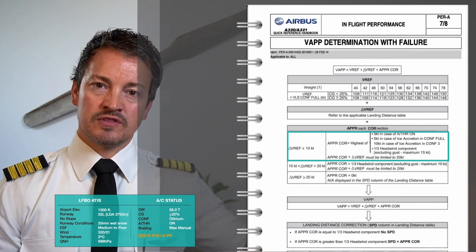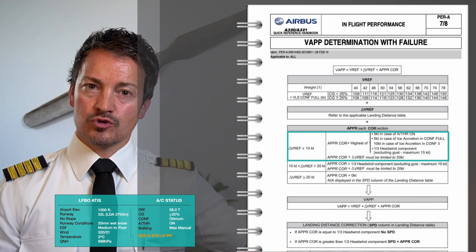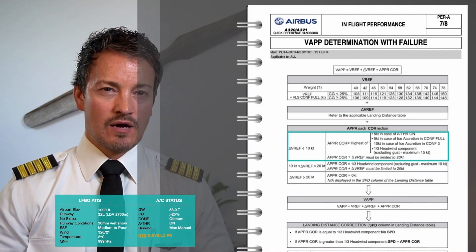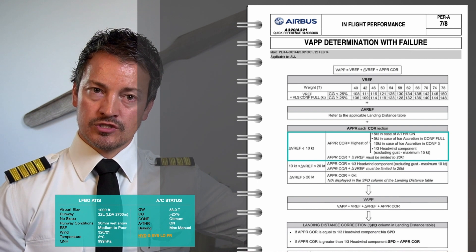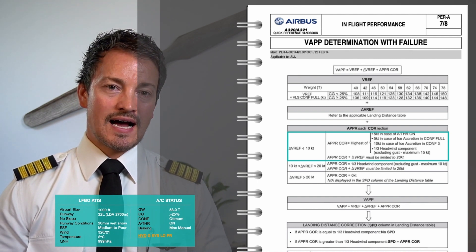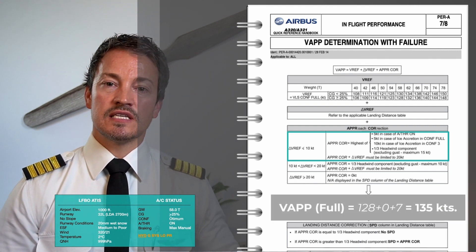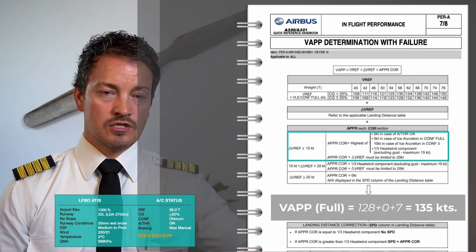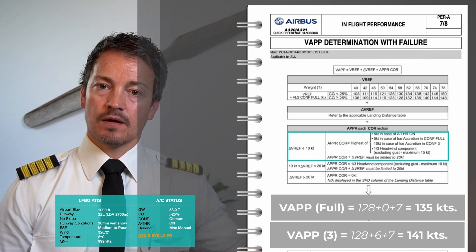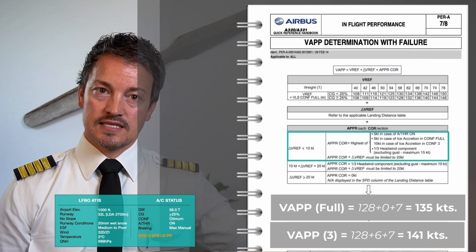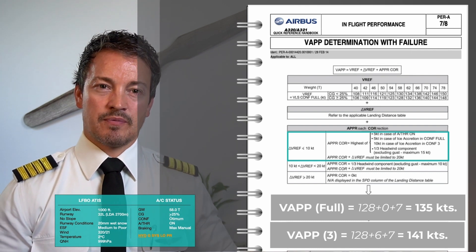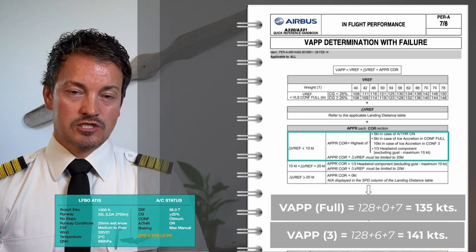Note at the bottom: approach correction plus delta V ref must not exceed 20 knots. Ours doesn't: 7 knots approach correction plus 6 knots delta V ref for config 3 is fine. Putting it together — config 4: 128 + 0 delta V ref + 7 = 135 knots V approach. Config 3: 128 + 6 + 7 = 141 knots V approach. Already we can see that config 3 will likely give a longer landing distance due to the higher speed.